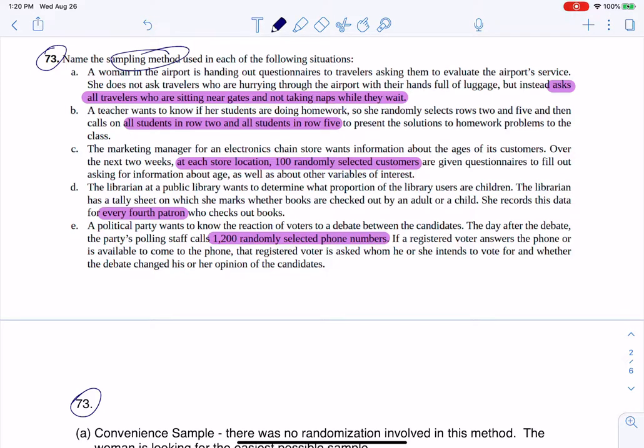And keep in mind, we ultimately have five of them, right? We have the SRS, you have stratified sample, you have the cluster sample, you have the systematic sample and then you have the good old convenience sample. And I think these are probably the two that are hardest to distinguish between because they both involve groups.